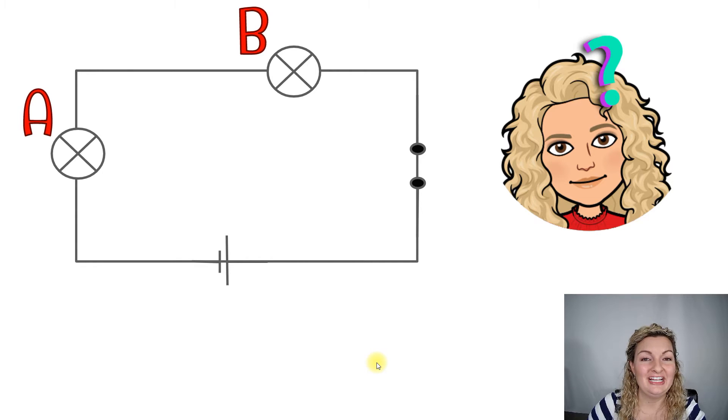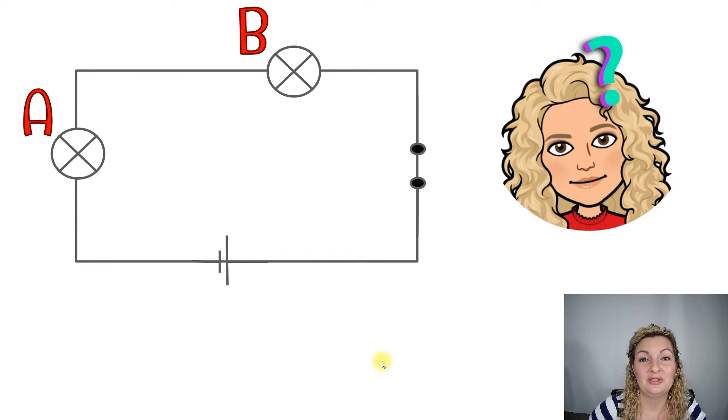So here we have a circuit. We have light bulb A and light bulb B. You're just telling me which ones will light up. You can go ahead and pause it, and I'm going to show you the answer in a second.